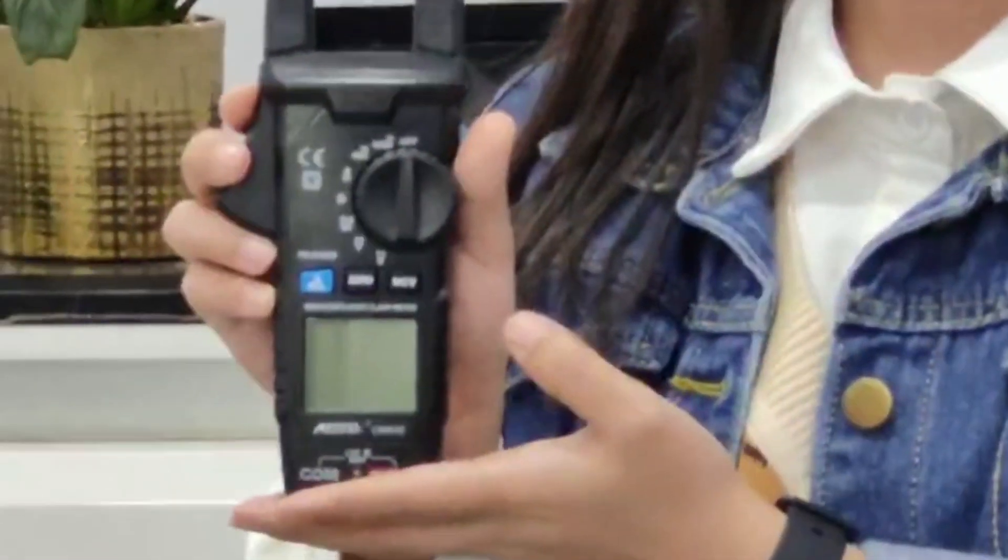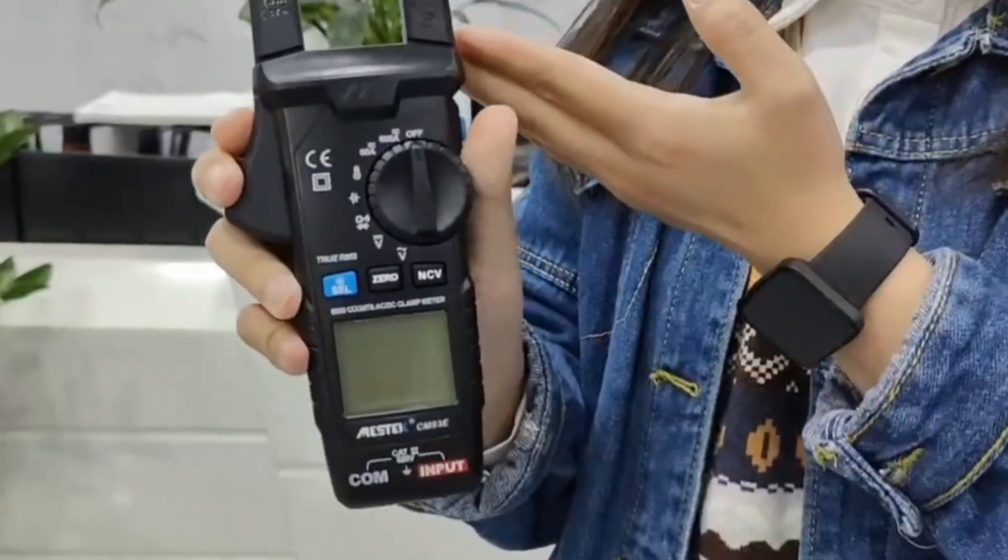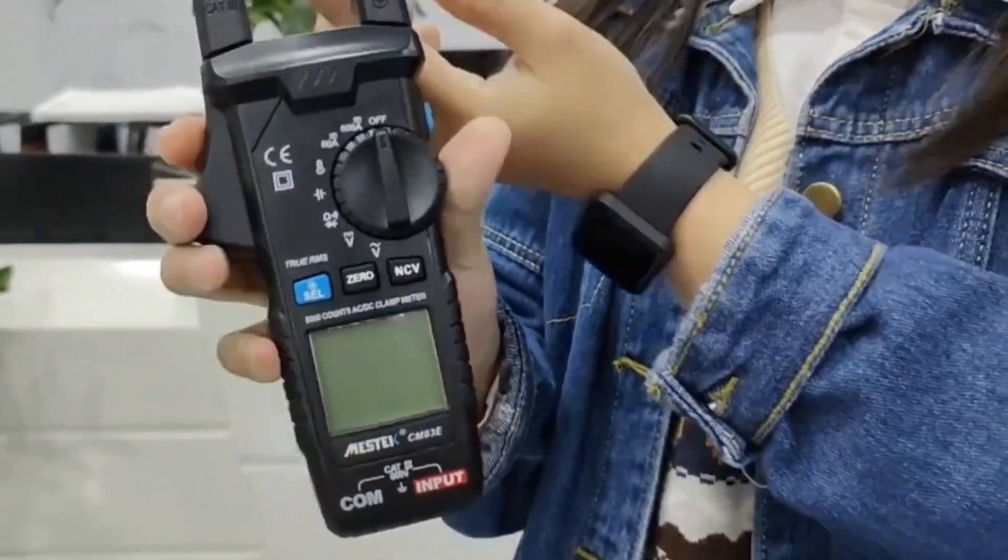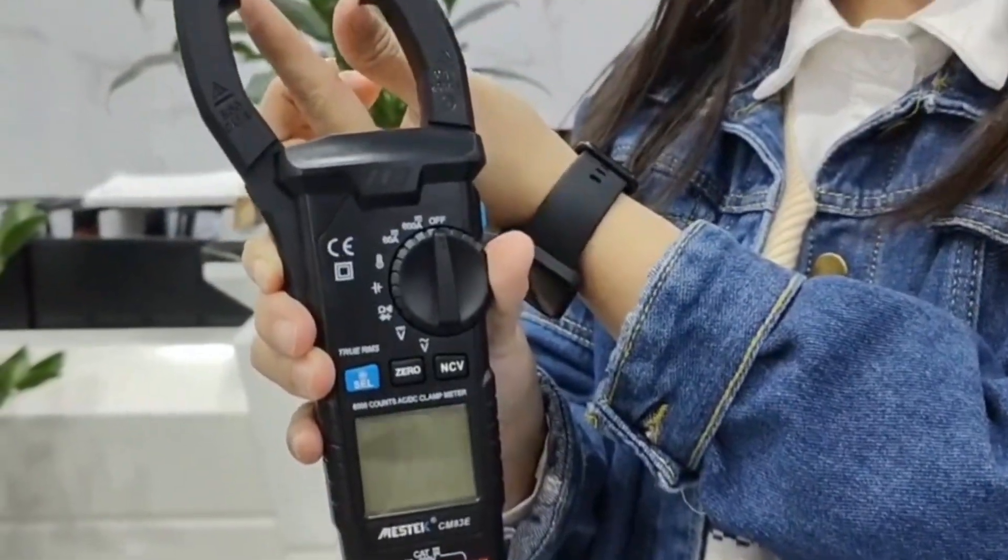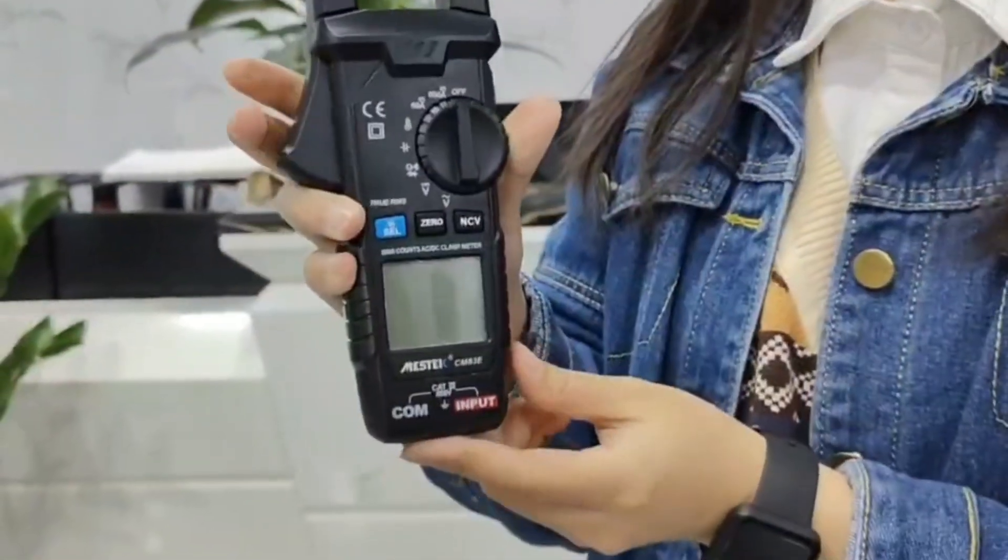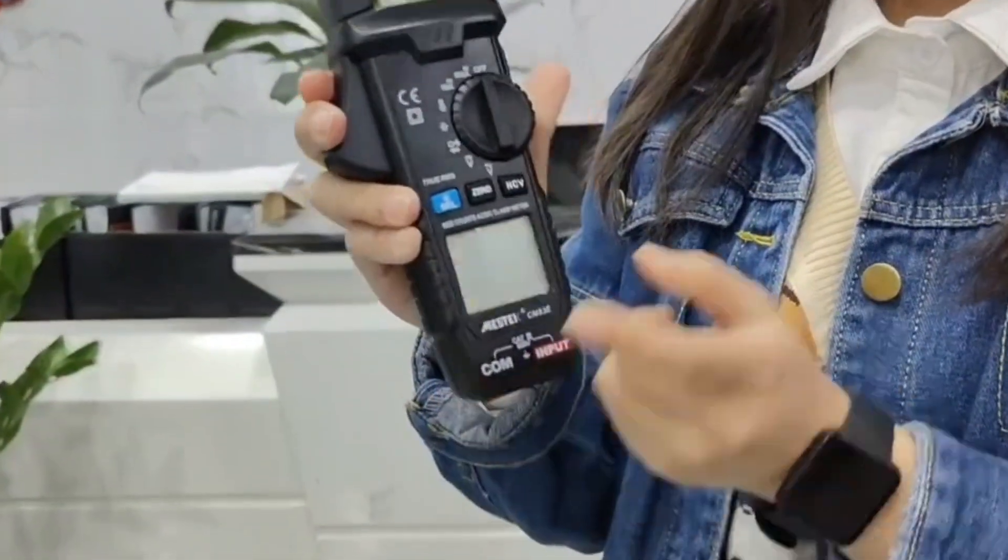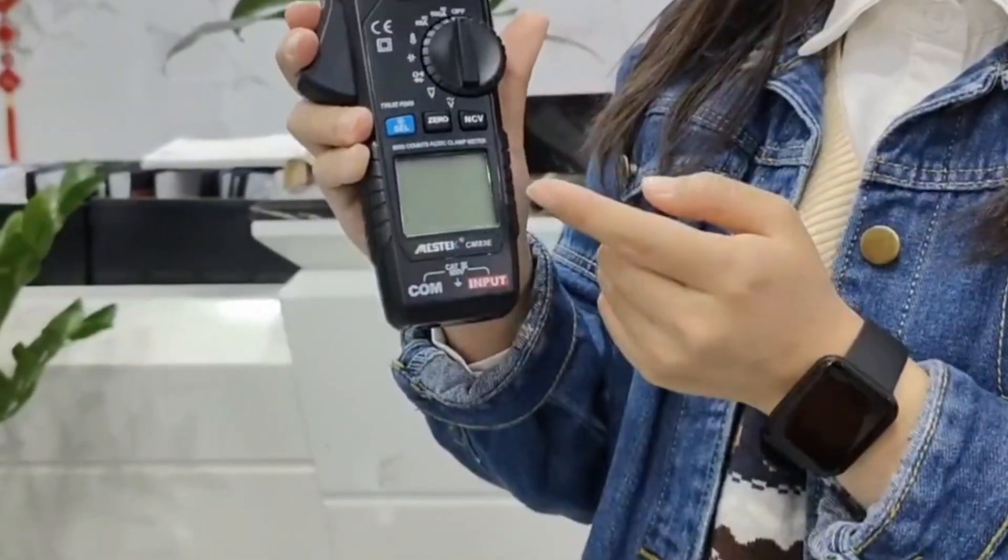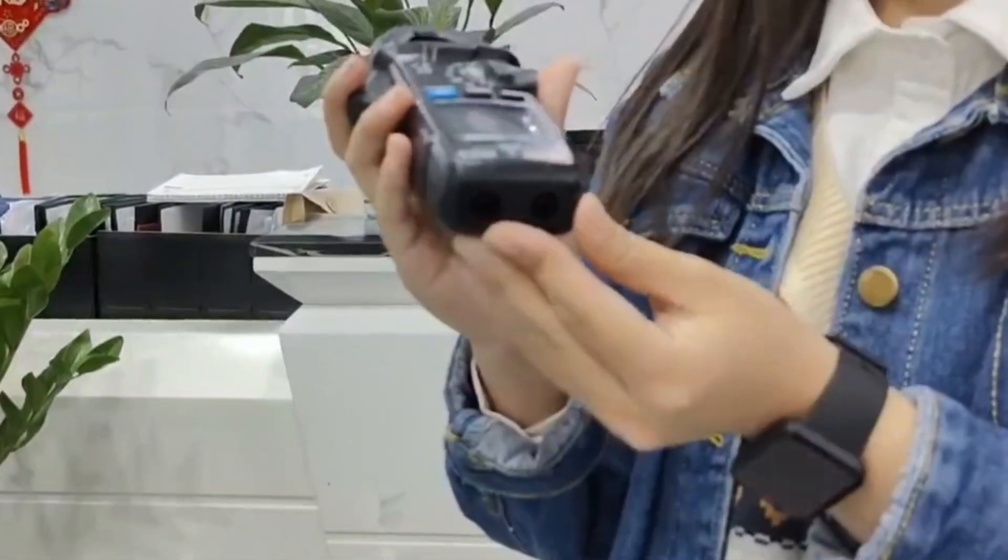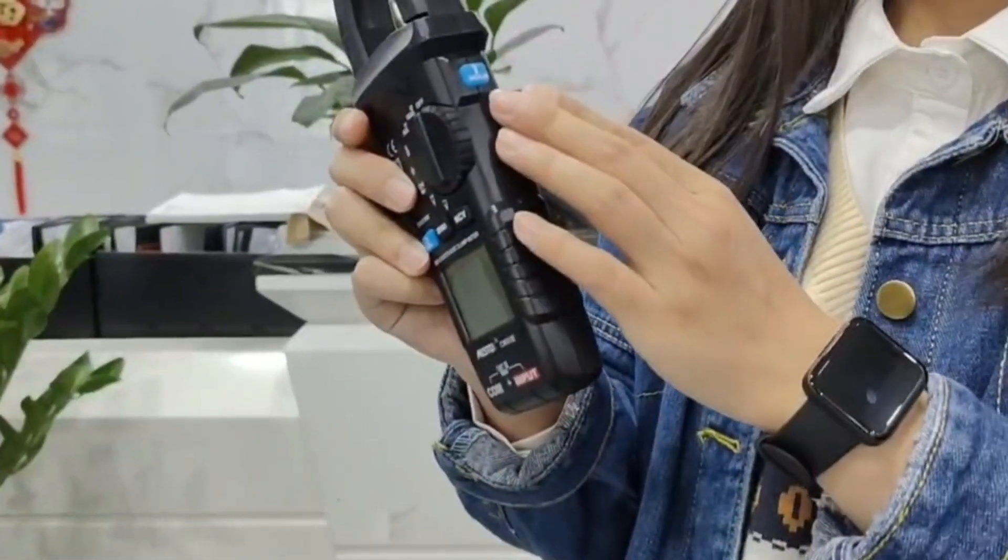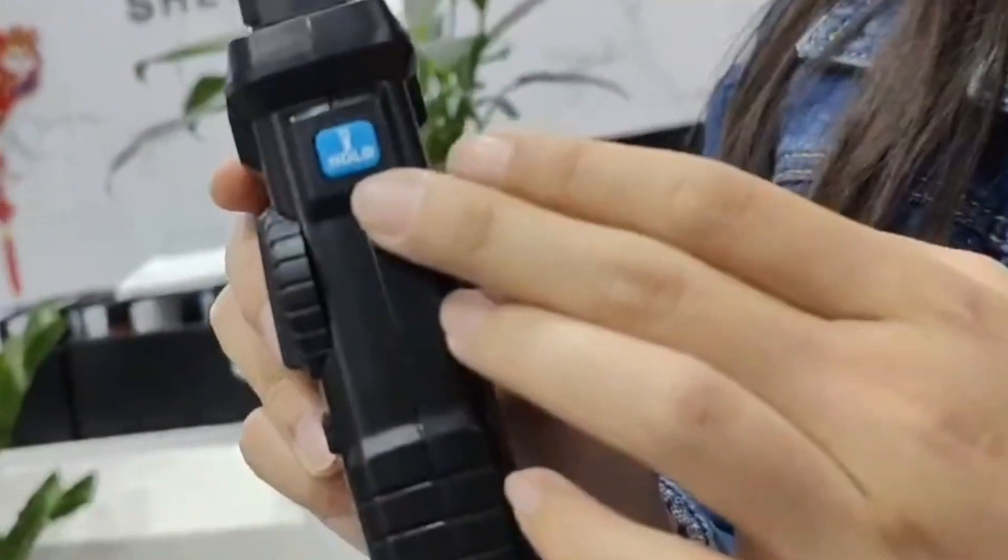This is our latest AC and DC clamp meter in the CMH3 series, model code CMH3E. Look at its pliers - the distance between the two jaws is 3 cm. Here is the trigger switch, blue and black buttons, screen and probe jacks, flashlight, and data hold button.